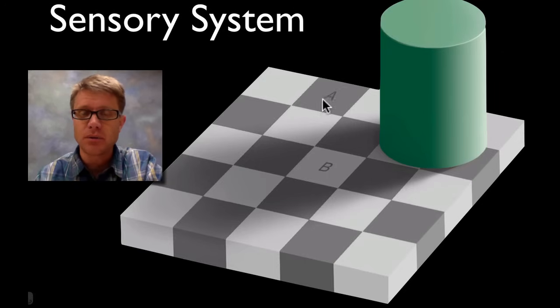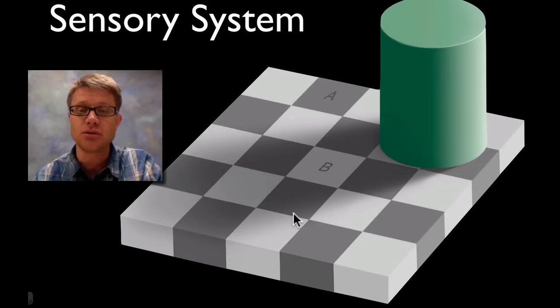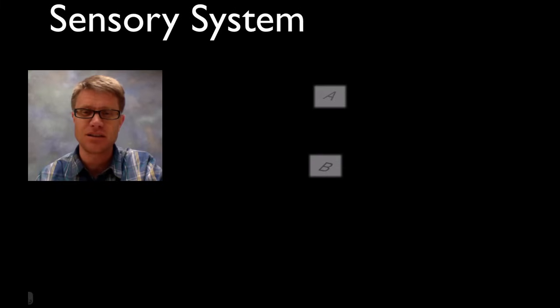What do I mean by that? Well right here we've got this cylinder and A and B. A and B, this is just an optical illusion, are exactly the same color. They're the same hue of gray. You might say no way. If I were to remove the rest of the drawing then you see that they're the same color of gray.